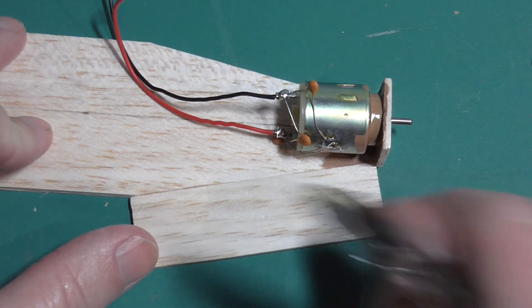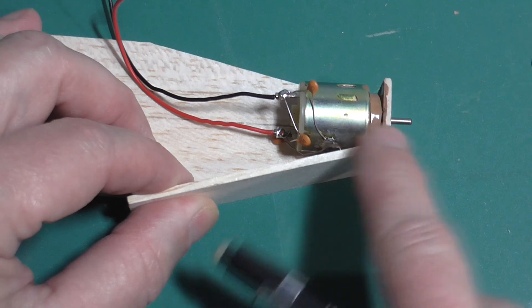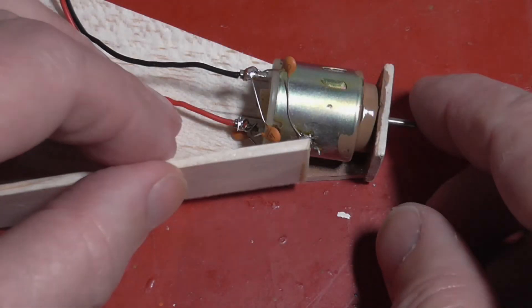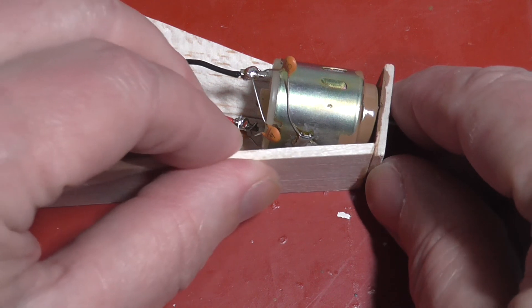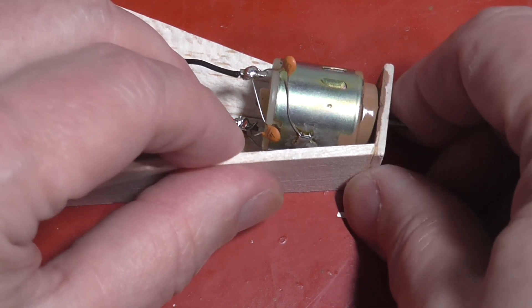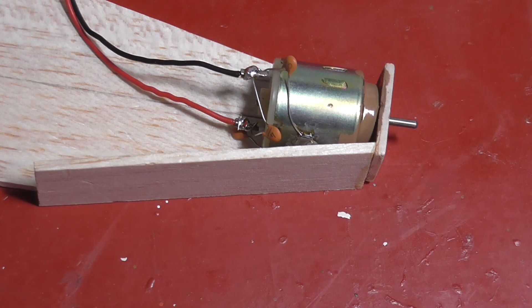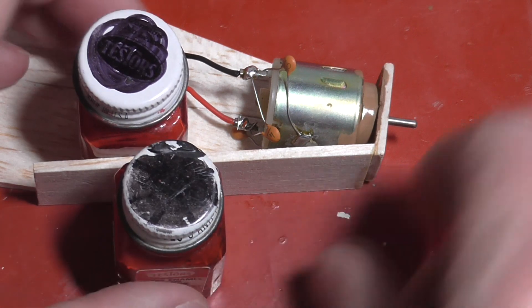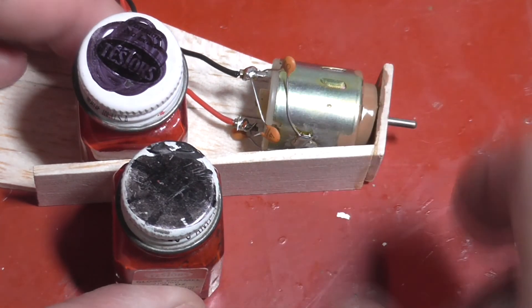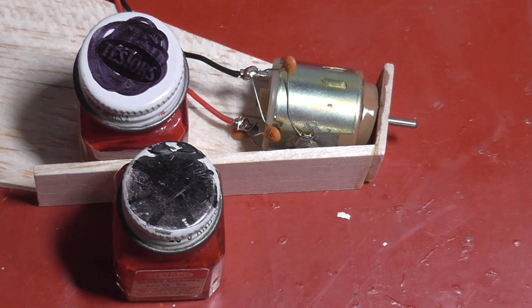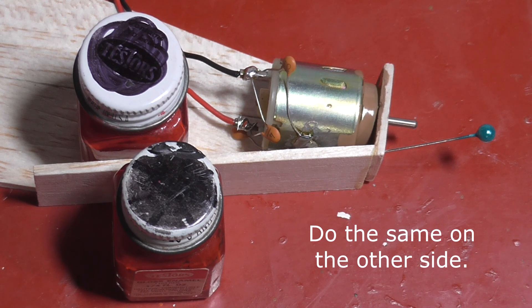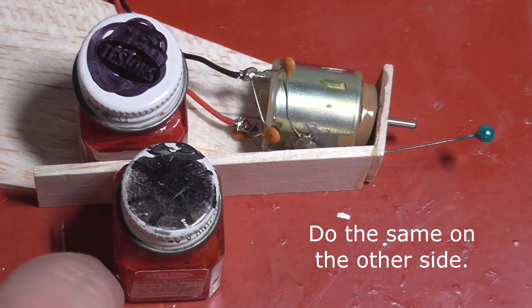Next, test fit the fade strakes. Some sanding must be used to bevel this edge for a tight fit. This is the most common area of leaks. Tight fit. Glue that puppy. And here's what you got.